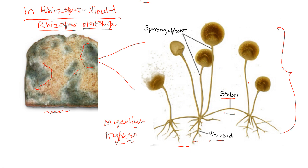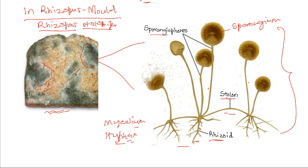Then there are the sporangiophores. The sporangiophores grow away from the substrate and bear spore-producing structures at their apex known as the sporangia. On the apex, there are spherical structures known as sporangia that produce spores. You can see these are sporangia that have ruptured to release many spores.